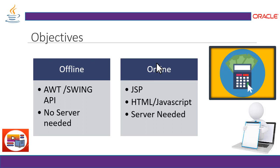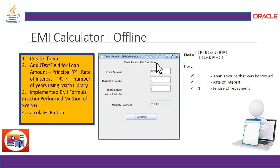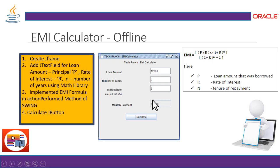To make it more interactive, you can use CSS stylesheets. Now let's look at the offline EMI calculator. We need to implement the EMI formula, which uses the principal P, multiplied by the rate of interest R, where N is your tenure of repayment. We first need to create a JFrame using the Swing API.